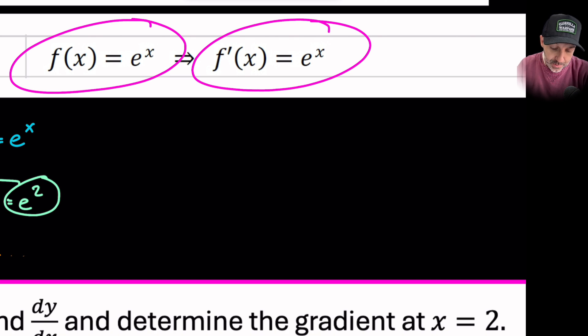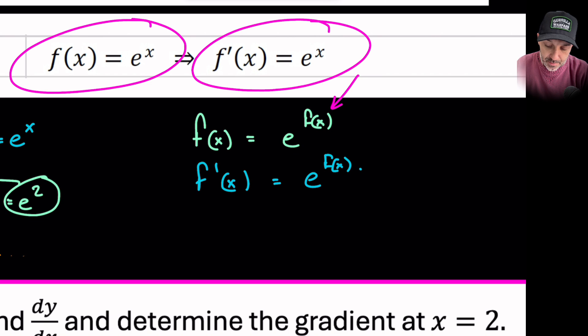Now I'm going to go straight in with explaining the quick way of doing these. If you are given f(x) equal to e^(f(x)), then the derivative of f is going to be e^(f(x)) times by the derivative of the power, so the derivative of the indice.